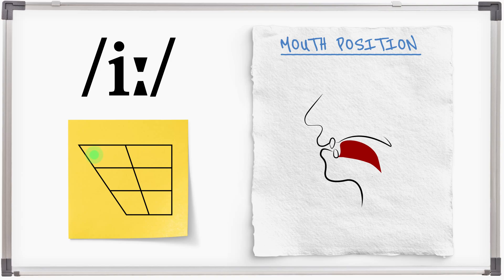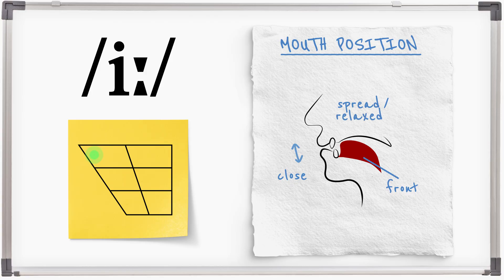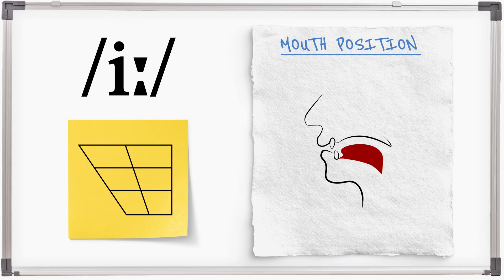E is made with the tongue to the front and the jaw close. The lips can be spread or relaxed to achieve the sound. It commonly starts a bit more centrally and moves to the front.